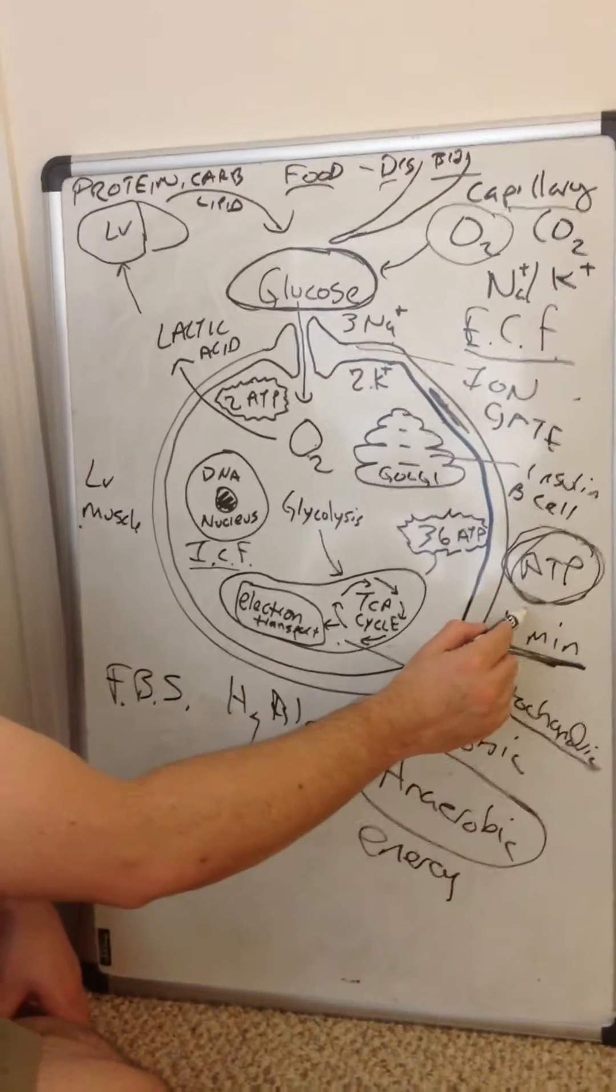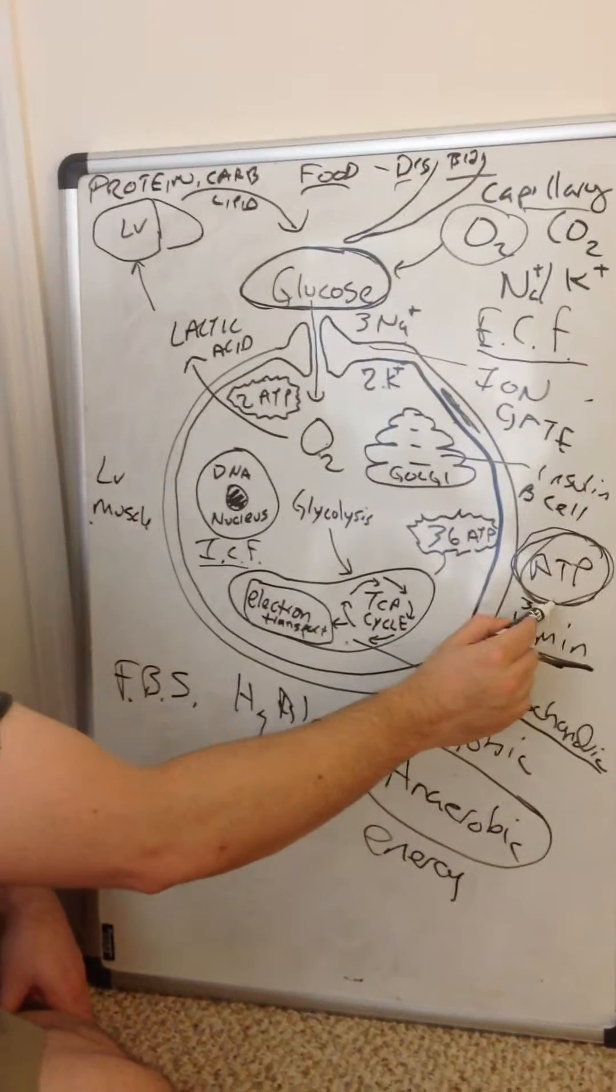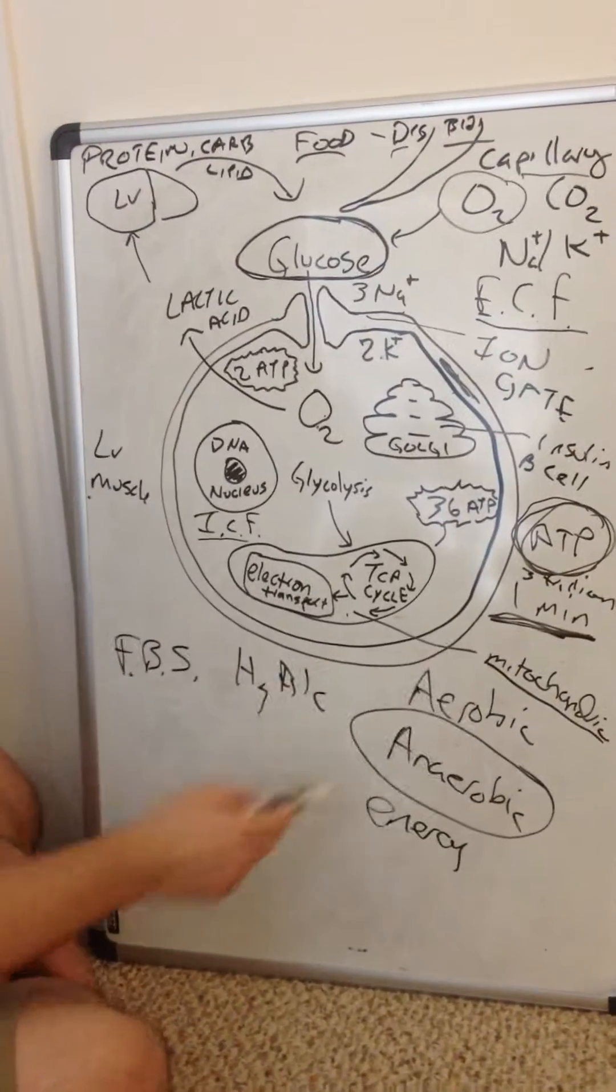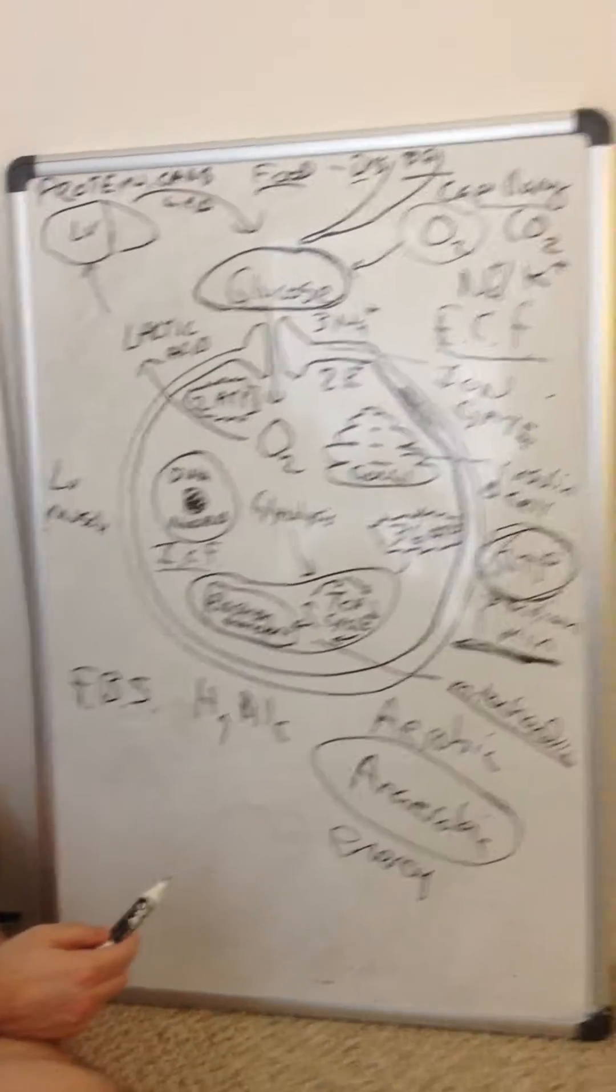How many cells? Trillions of cells. Three trillion. There's trillions upon trillions of cells that are constantly making what? ATP from what? The glucose molecule.